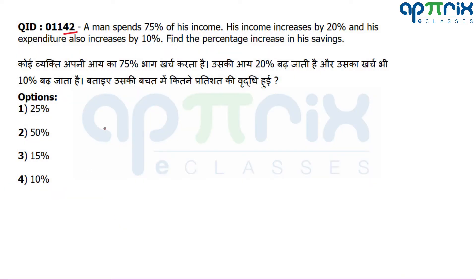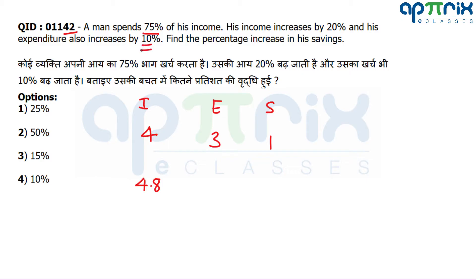Question number 1142: A man is spending 75% of his income. His income is increasing by 20% and his expenditure is also increasing by 10%. We have to find the percentage increase in his saving. Assume total income is 4, so expenditure is 3 and saving is 1. After changes, income becomes 4.8 and expenditure becomes 3.3, so saving becomes 1.5. Since 1 is becoming 1.5, that is a 50% increase.